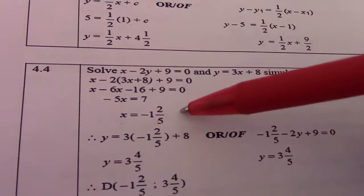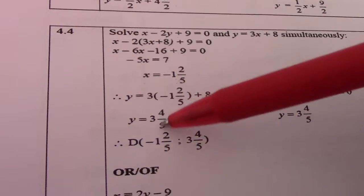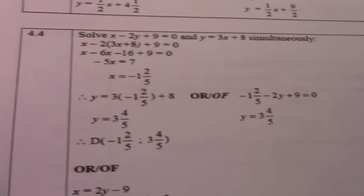So 3 times minus 1 and 2 over 5 plus 8 simplifies to y equals 3 and 4 over 5. So T is at negative 1 and 2 over 5, 3 and 4 over 5.